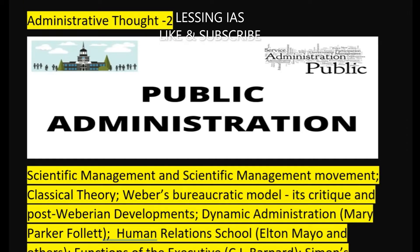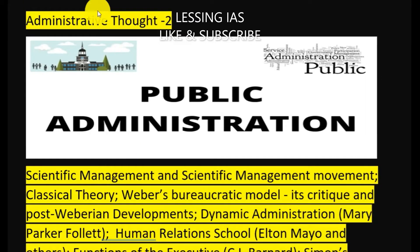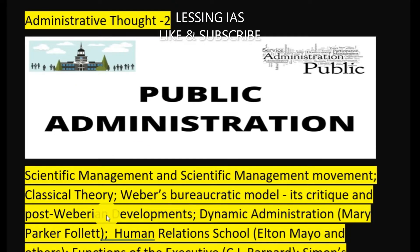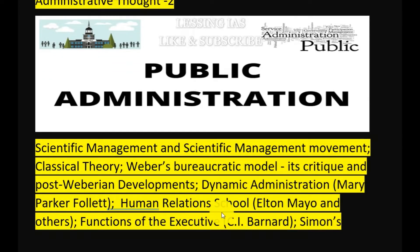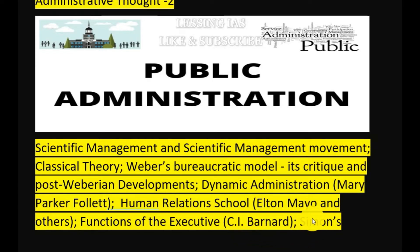In chapter 2, administrative thoughts, we would be discussing scientific management and the scientific management movement, classical theory, Weber's bureaucratic model and its critics and post-Weberian developments, dynamic administration, Mary Parker Follett, human relations school, Elton Mayo and others, functions of the executive by Chester Barnard, and Simon's concept of public administration.